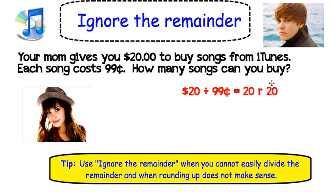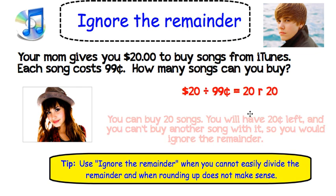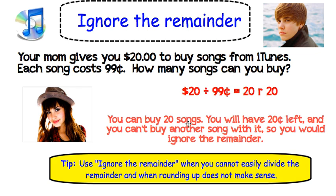We need to decide what to do with that remainder. We can buy 20 songs, but we have that $0.20 left. We cannot buy another song for $0.20 because each song is $0.99. What would we do with that $0.20? We would just ignore it. This is an example of where you would ignore the remainder.